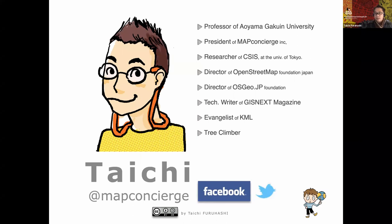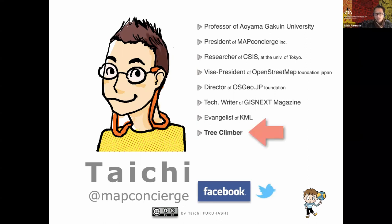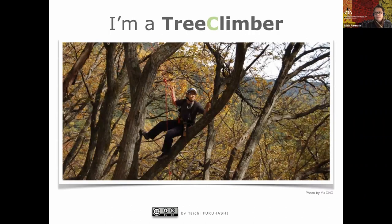I collaborate with Tokyo University, Kyoto University, and other universities as a researcher. I work with open geospatial communities including OpenStreetMap, OSGeo, and other drone communities. Very importantly — I am a tree climber. That is my hobby, and I think it relates to this class and the Neo-Geographer's work. I have two licenses for tree climbing.